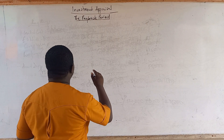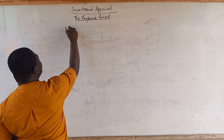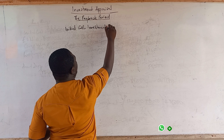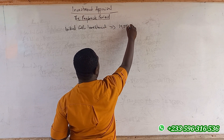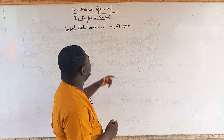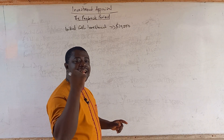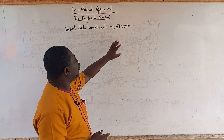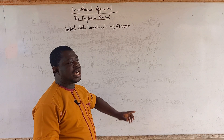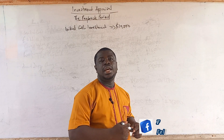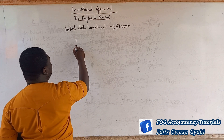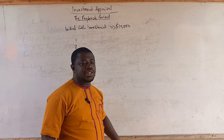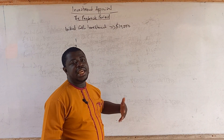Simply put, let's assume there is an initial cash outlay or initial cash investment of $10,000. The payback period determines the number of years — usually in years — it will take for this initial $10,000 to be recovered or recouped. The date or time in which you are putting in the money is year zero.